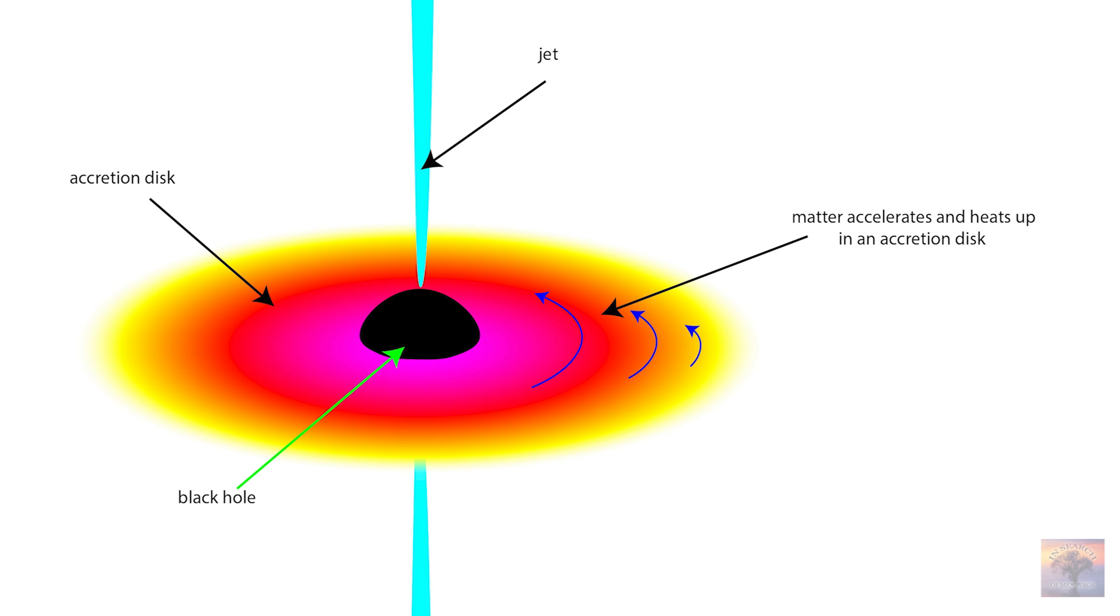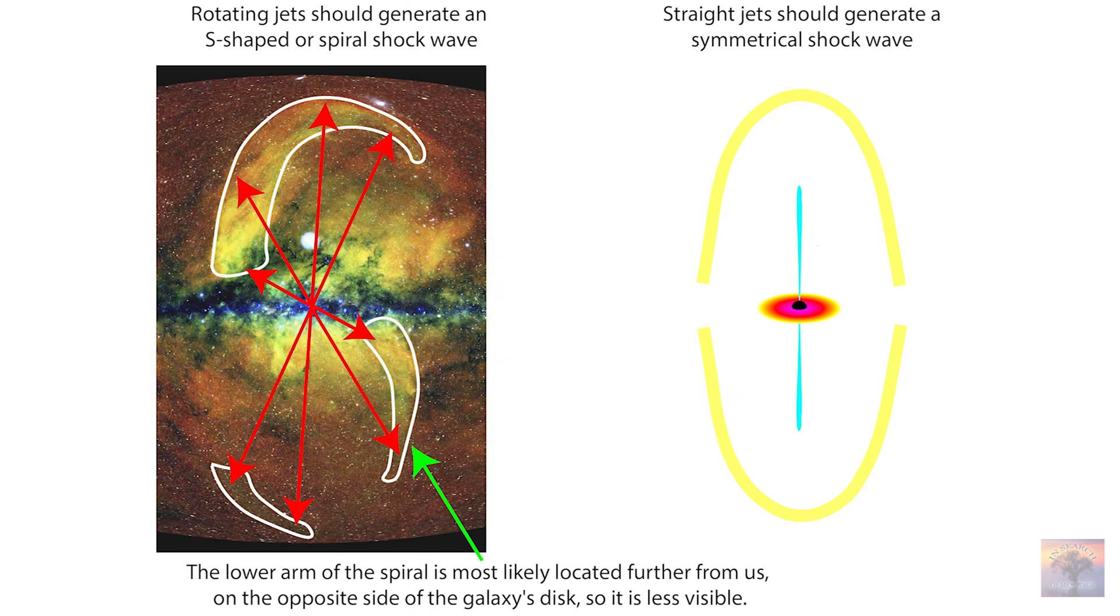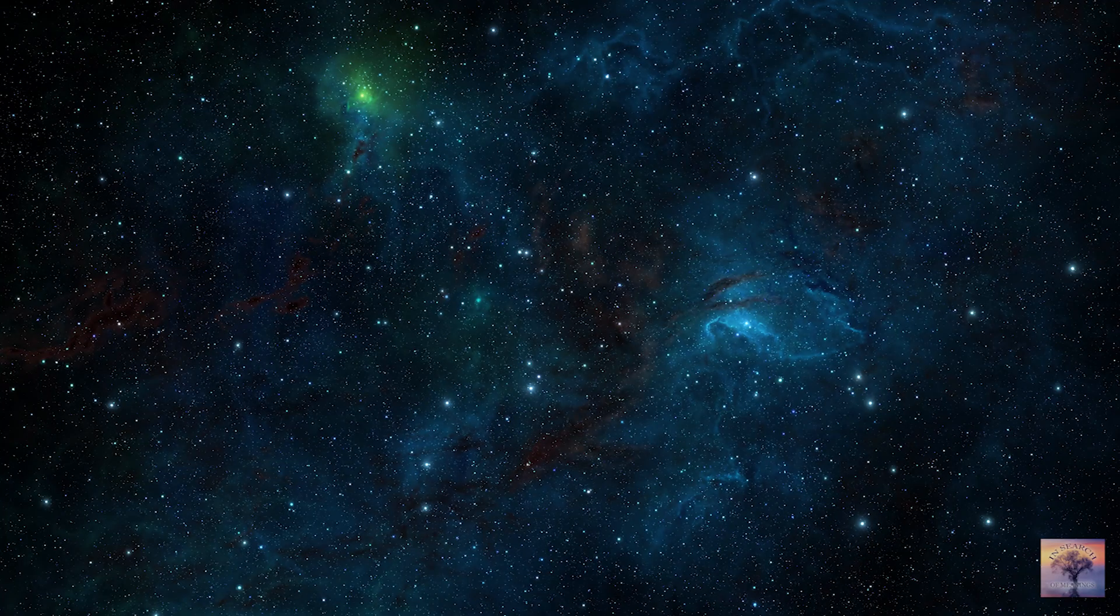And this comes from the fact that the cause of these jets should be the accretion disk, which in turn, based on the conservation law, should not change its position and orientation. But as you understand, straight jets do not explain this pronounced asymmetry in any way. But unfortunately, so far there is too little cumulative data to say anything definite.